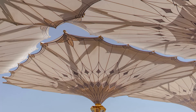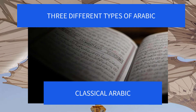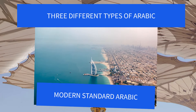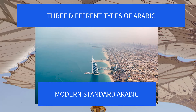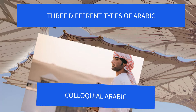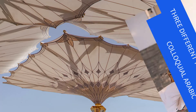Today there are three different types of Arabic. Classical Arabic is the language of the Quran, the main text of Islam. Modern Standard Arabic is used in publishing, education, and media across the Arab world. Colloquial Arabic is used in everyday conversation with different regional variations.